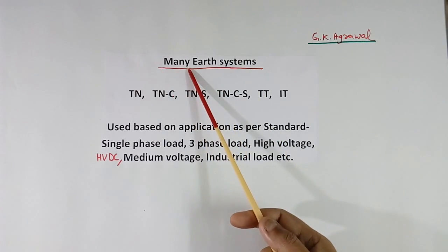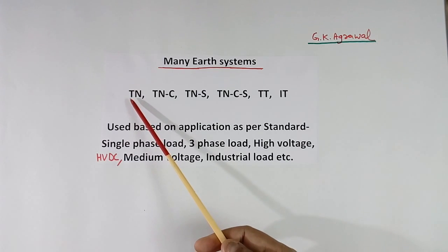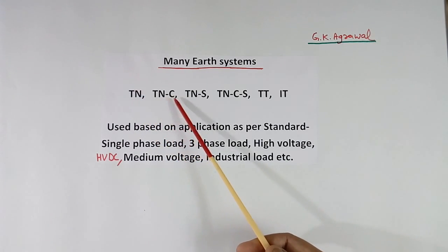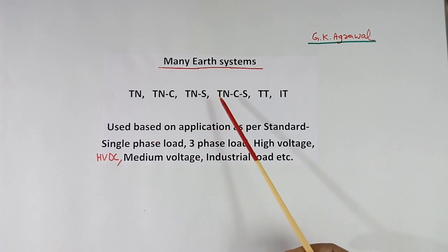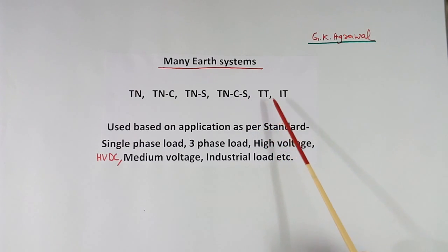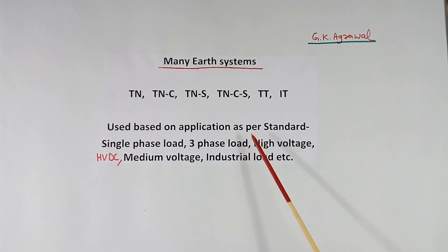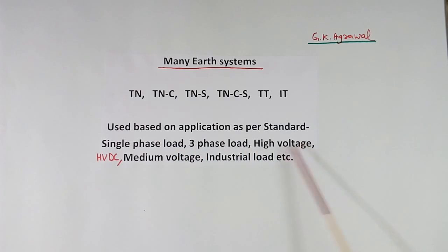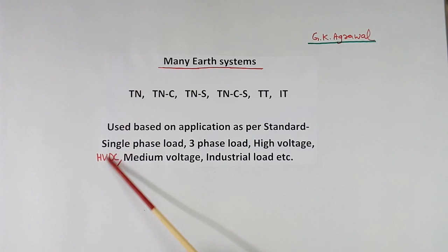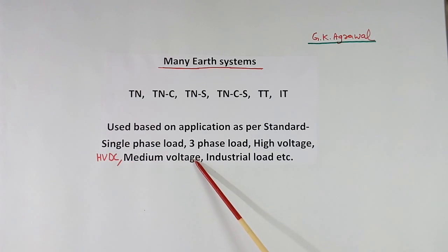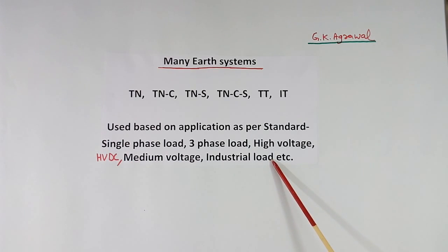Earthing systems are of many types: TN type, TNC type, TNS type, TNCS type, TT type, and IT type. Which one to be followed depends upon the application, as per standard. Your load application may be single phase load, 3 phase load, high voltage, HVDC — which is quite complex — medium voltage, industrial load, or some other.